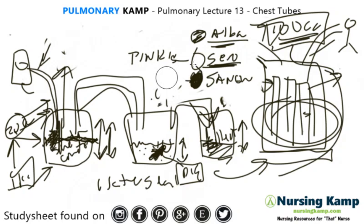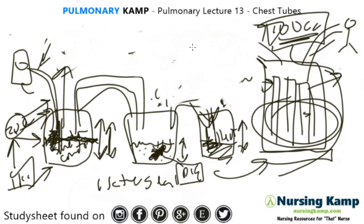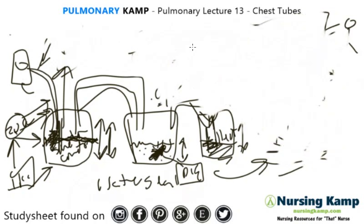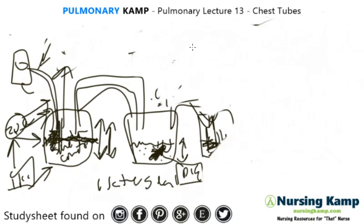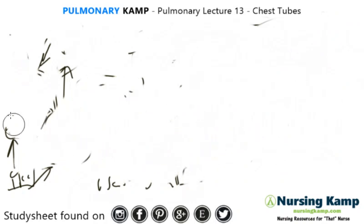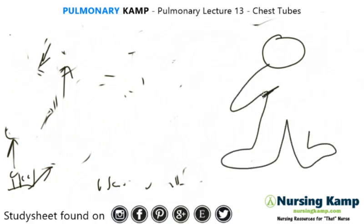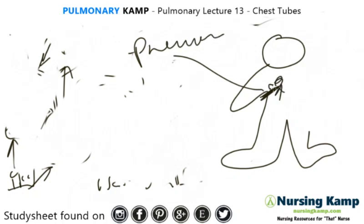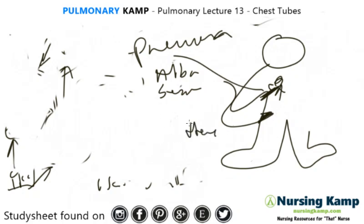When you walk into a room and see a chest tube, first check — is it bubbling or not? Also check the location. If the chest tube is positioned higher, it's probably for a pneumothorax since air goes up, and you'll likely see more alba or serosanguinous drainage. If it's positioned lower, that's mostly for a hemothorax, so you'll be monitoring for bleeding — and greater than 100 cc's is acute.